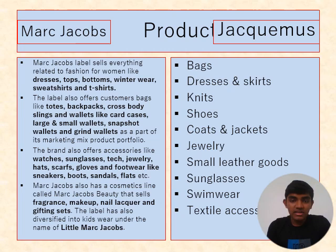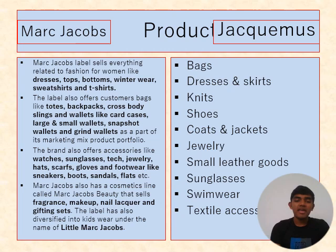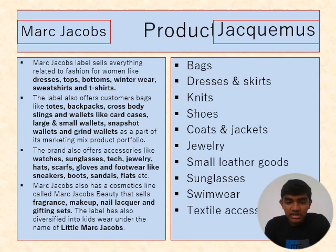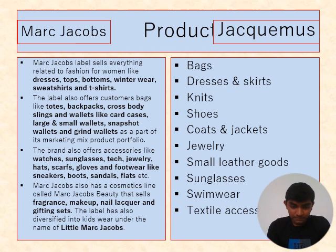For products, Marc Jacobs sells everything related to women's fashion — dresses, tops, bottoms, winter wear, sweatshirts, and t-shirts. The label also offers bags like totes, backpacks, crossbody, and sling bags, as well as wallets. As part of its product portfolio, the brand also offers accessories like watches, sunglasses, tech, jewelry, hats, scarves, and gloves, as well as footwear like sneakers, boots, and sandals. Marc Jacobs also has a cosmetics line called Marc Jacobs Beauty that sells fragrances and makeup like nail polish and gifts. The label has also diversified into kidswear under the name Little Marc Jacobs.